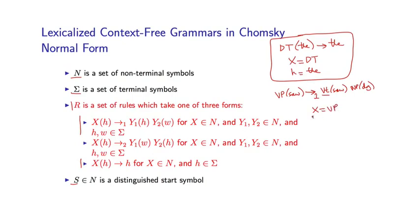In this particular example, we have X equals VP, Y1 is equal to VT, Y2 is equal to NP, H is equal to saw, and W is equal to dog.